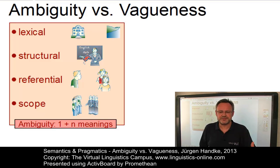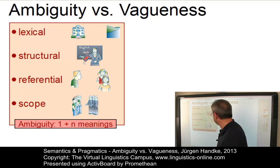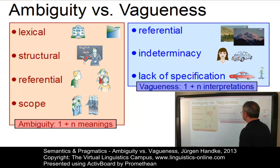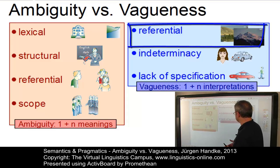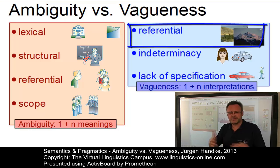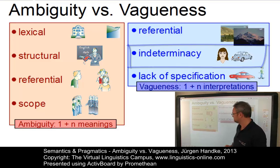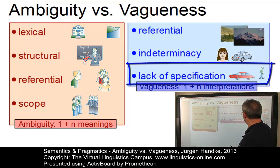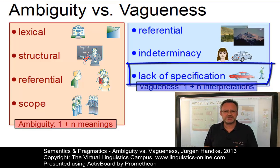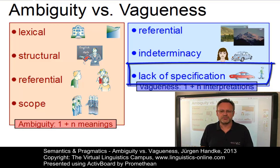Vagueness by contrast is defined as the phenomenon of one linguistic item allowing several interpretations. Here are the main examples: referential vagueness — the difference between hills versus mountains, which we discussed in the vagueness e-lecture; indeterminacy of meaning — 'Linda's car' — is she the owner?; and lack of specification, which you can find in verbs of motion such as 'go', which is not precisely specified as to what sort of vehicle you used or how you moved.